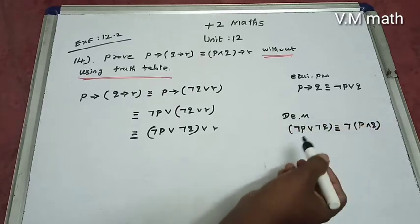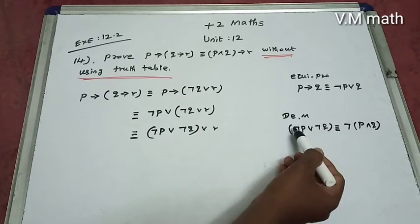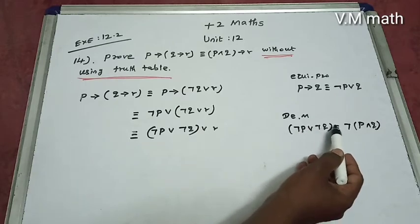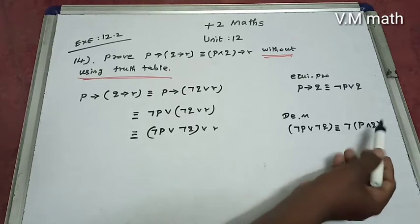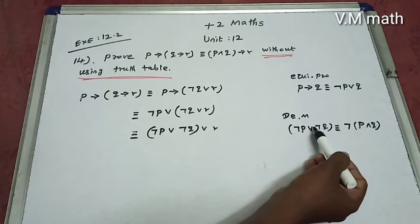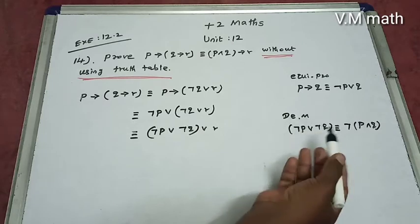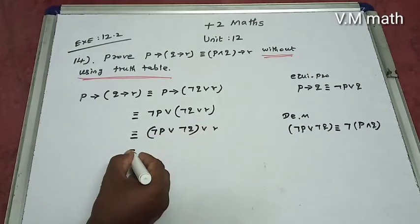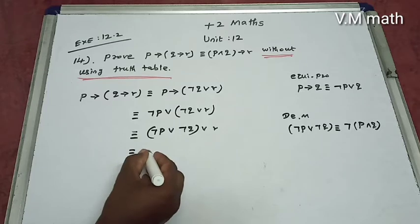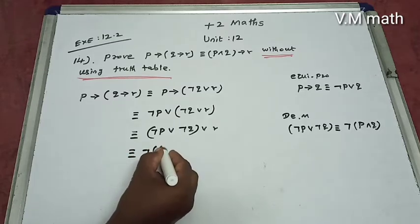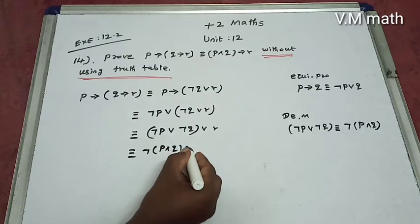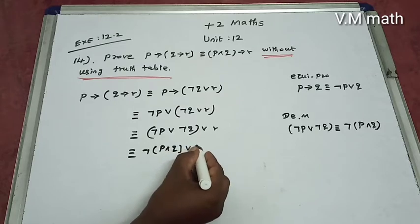This is De Morgan's law: negation of p and q is equal to negation of p or negation of q. So this is the De Morgan's law statement which we use, giving us identical: negation of p and q, or r.